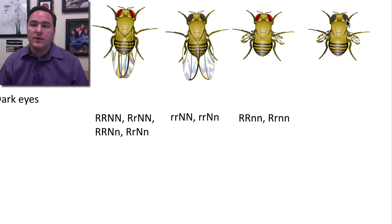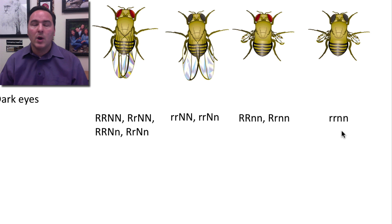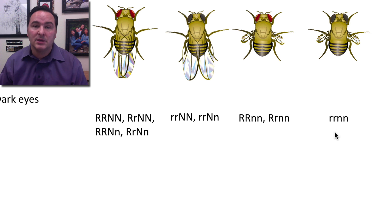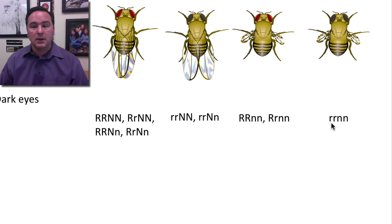And finally, for the dark-eyed vestigial wing phenotype, there is only one genotype that can possibly produce it: little r little r, little n little n.